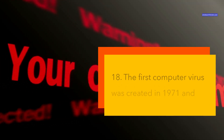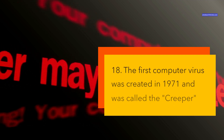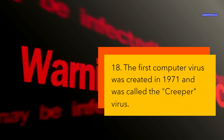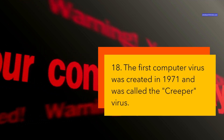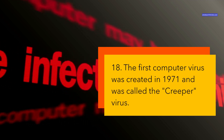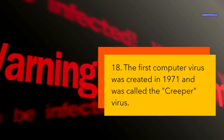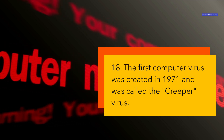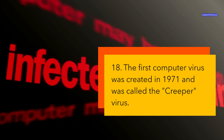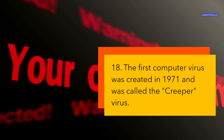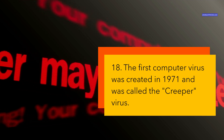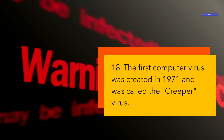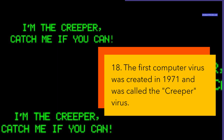The first computer virus was created in 1971 and was called the Creeper virus. A computer virus is a malicious program that can infect and harm other computers by copying itself and spreading through networks, email, or removable media. The first computer virus was created by Bob Thomas, a programmer at BBN Technologies, in 1971. He named it Creeper because it would move from one computer to another on the ARPANET, the precursor of the Internet. The virus would display the message, "I'm the Creeper, catch me if you can," on the infected computer screen.